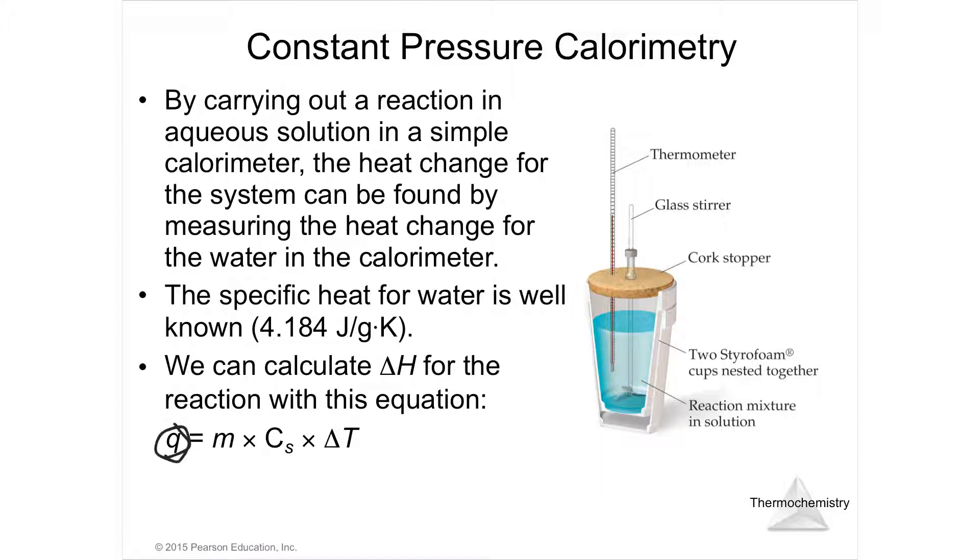And the formula is, is Q, which is heat, is whatever the mass of the water is times the specific heat of water, which we know is 4.184 joules per gram kelvin, times the change in temperature of the water.